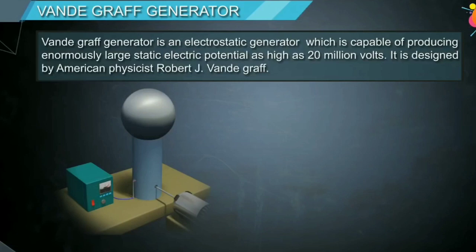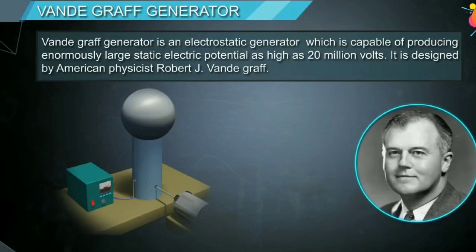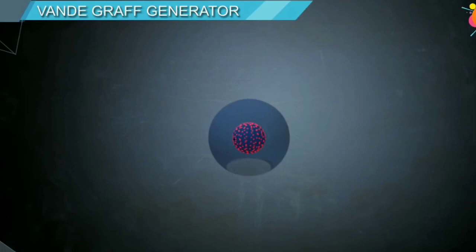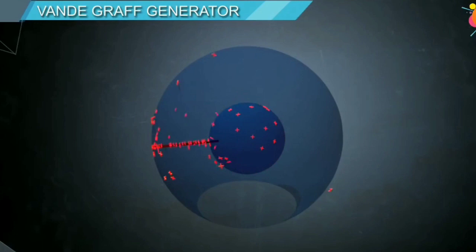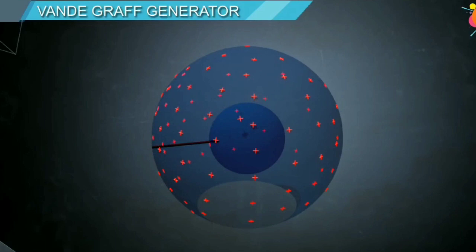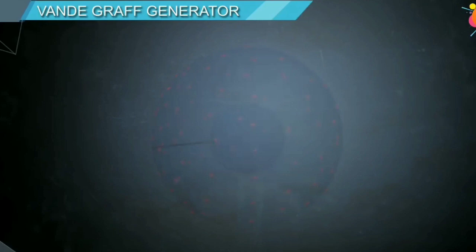This Van de Graaff generator can produce potentials as high as 20 million volts. It was designed by American physicist Robert J. Van de Graaff. It is based on the principle that if a charged conductor is brought internally in contact with a hollow conductor, all the charges from the inner conductor are transferred to the surface of the outer conductor, no matter what amount of charge is already present on the outer shell.